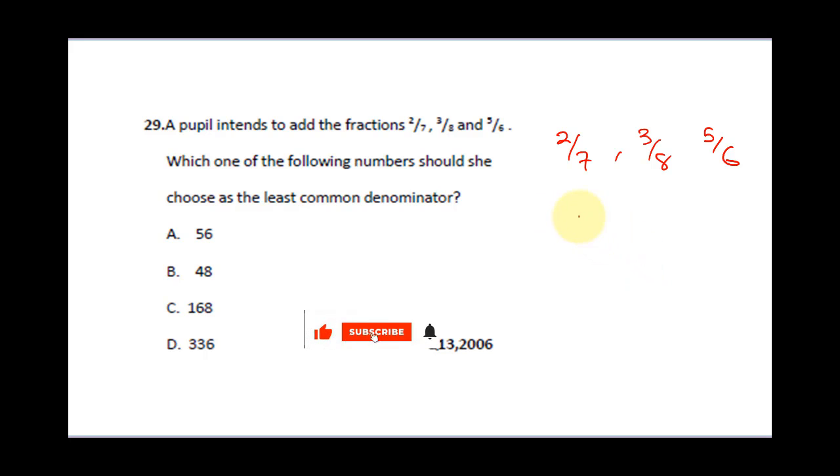That's 7, 8, and 6. We're going to work on the LCM. 2 into 7, it can't go. 2 into 8 is 4, 2 into 6 is 3. 2 can still go into 4, we have 2 and 3. 3 can go, we have 7, 1, and 1. 7 can go finally, that's 1, 1, 1.